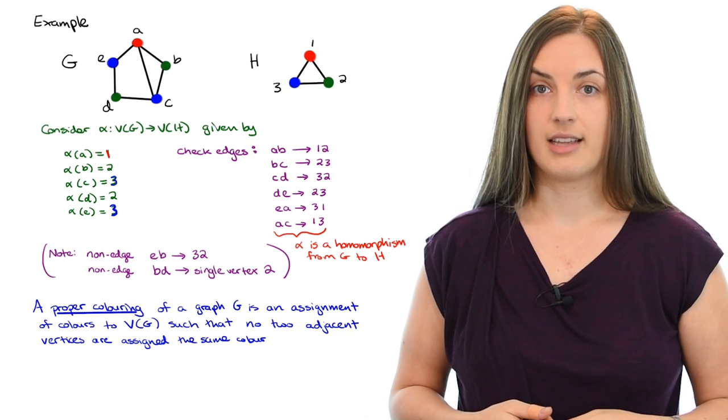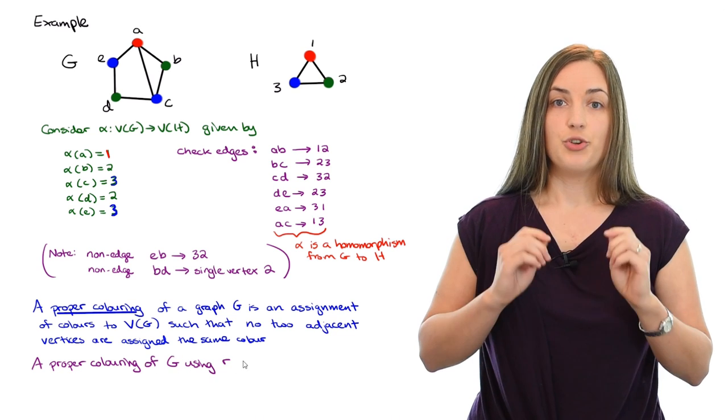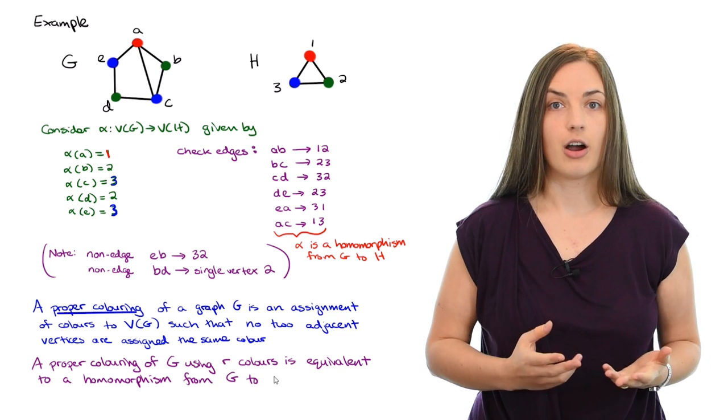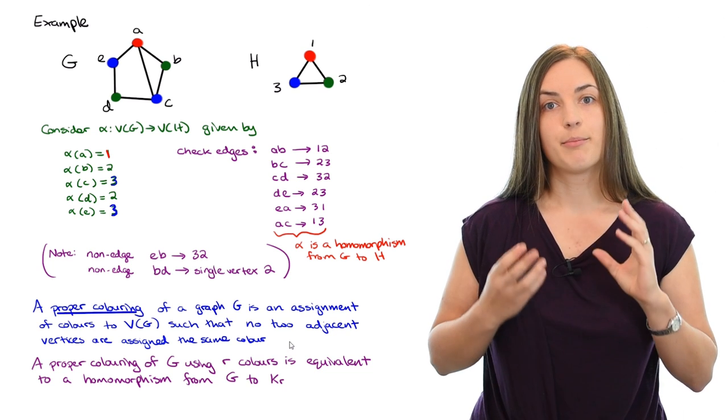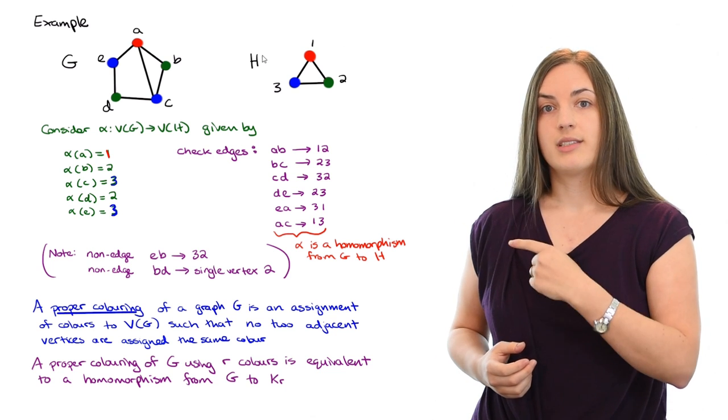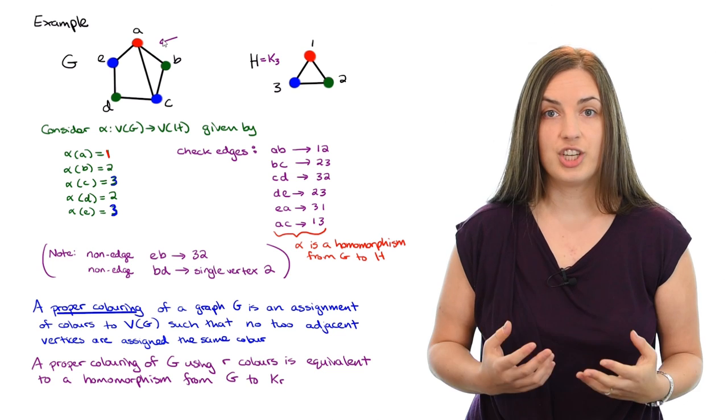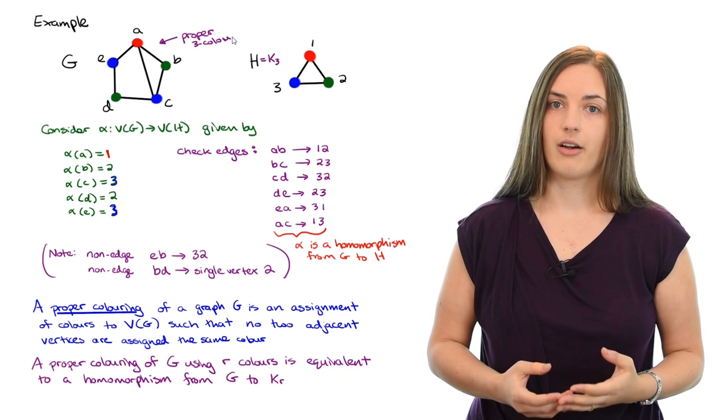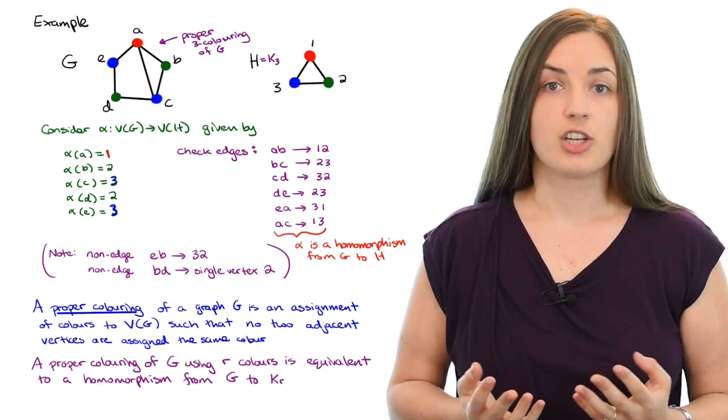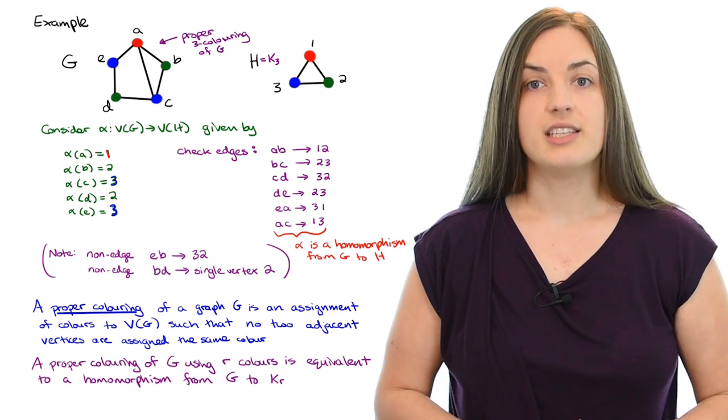It turns out that a proper colouring of a graph G using R colours is equivalent to a homomorphism from the graph G to KR, the complete graph on R vertices. So that's a particular example of homomorphisms being used in the context of colourings. In our little example, we see that our graph H is indeed K3, and the colouring that was induced onto the graph G is indeed a proper three colouring. You should observe that a homomorphism to a graph H can be more generic. The graph H could be any graph H. But the special case when that graph is a complete graph deals with the idea of a proper colouring.